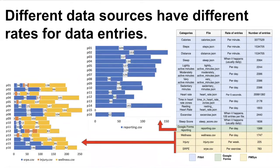The dataset has different rates for data entries from different sources. For example, the smartwatch has different rates for entries such as per minute, per day, and per second. It also records some data entries when they happen. You can see these changes in the blue section of the table. For the PMC's app, we can see that it has three different rates for data files collected from it, shown in the yellow section of the table.